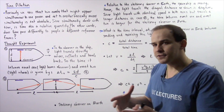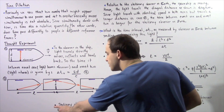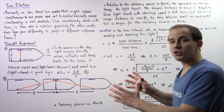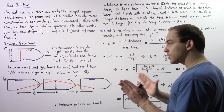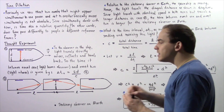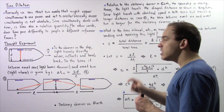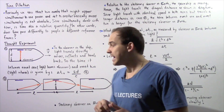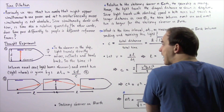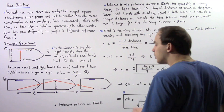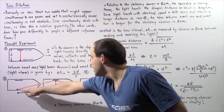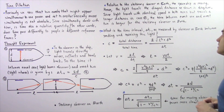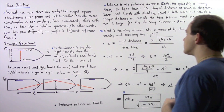Let's change reference frames. Suppose we now have a person that is stationary on Earth — we're assuming the Earth is stationary. That person is observing the same ray of light, but the ray of light will travel a different pathway because the spaceship is actually traveling with respect to the stationary observer on Earth with velocity V. So relative to the stationary observer on Earth, the spaceship is moving with velocity V to the right along the horizontal axis.